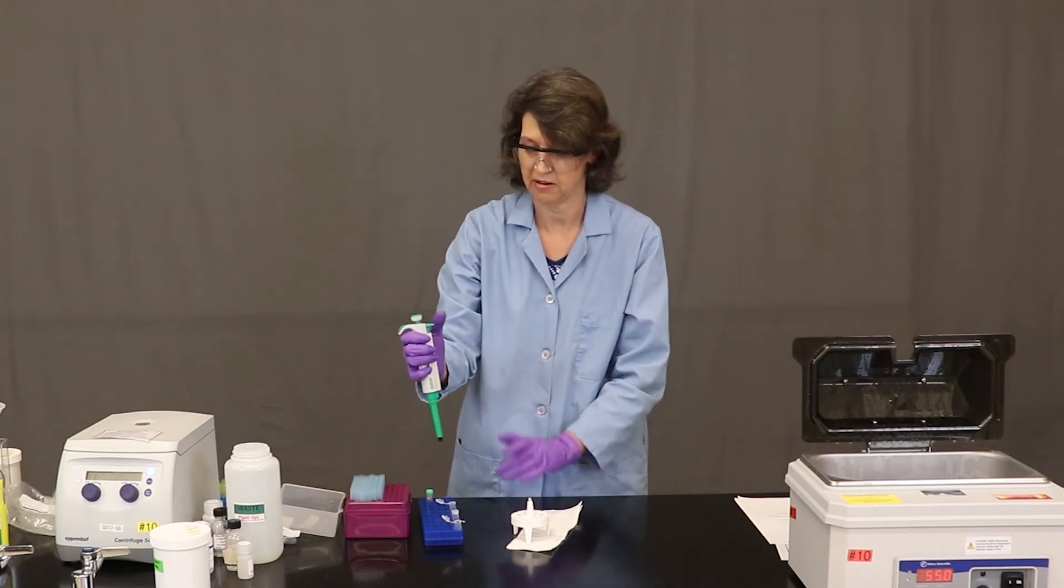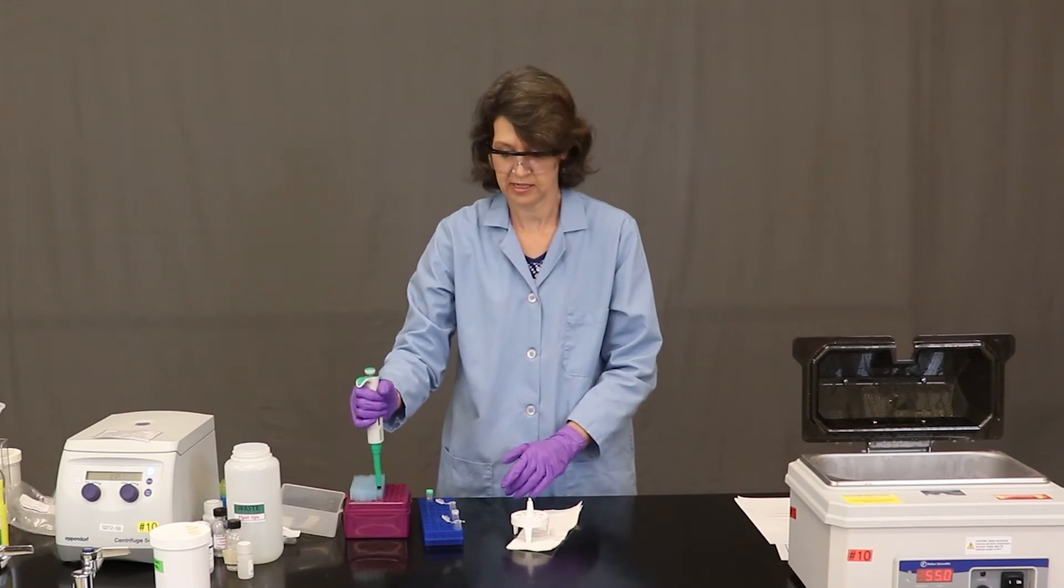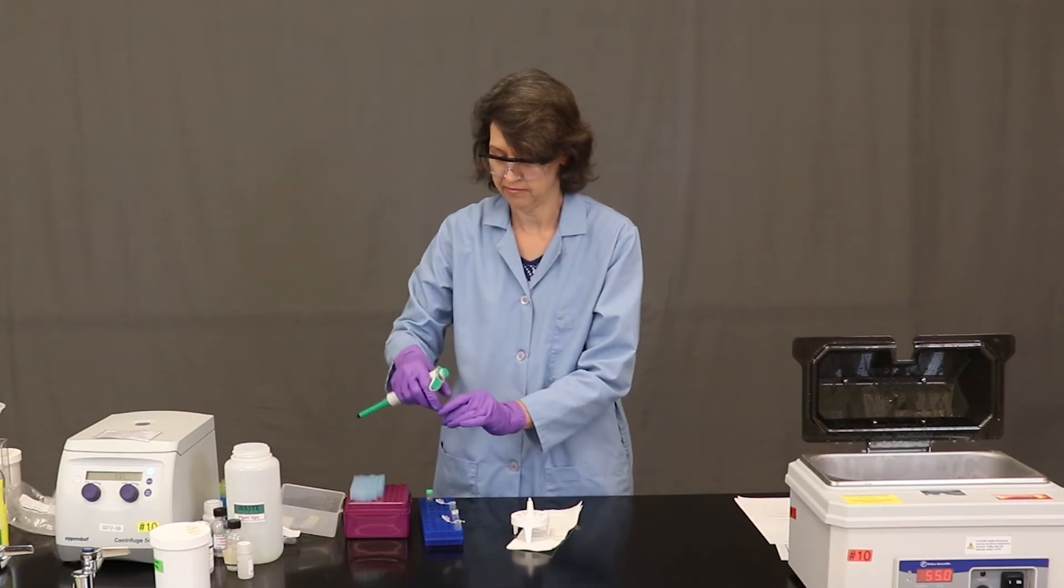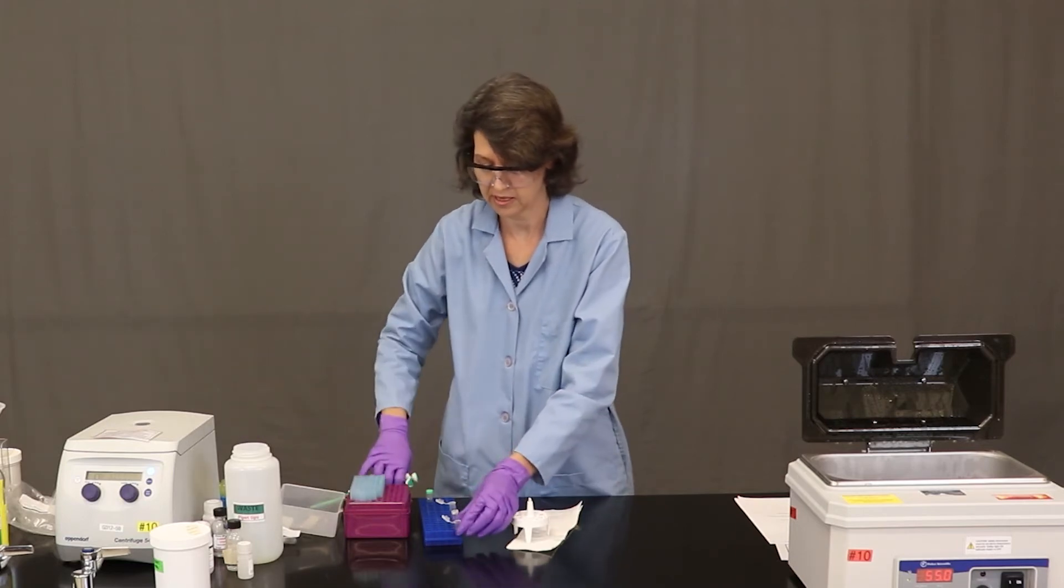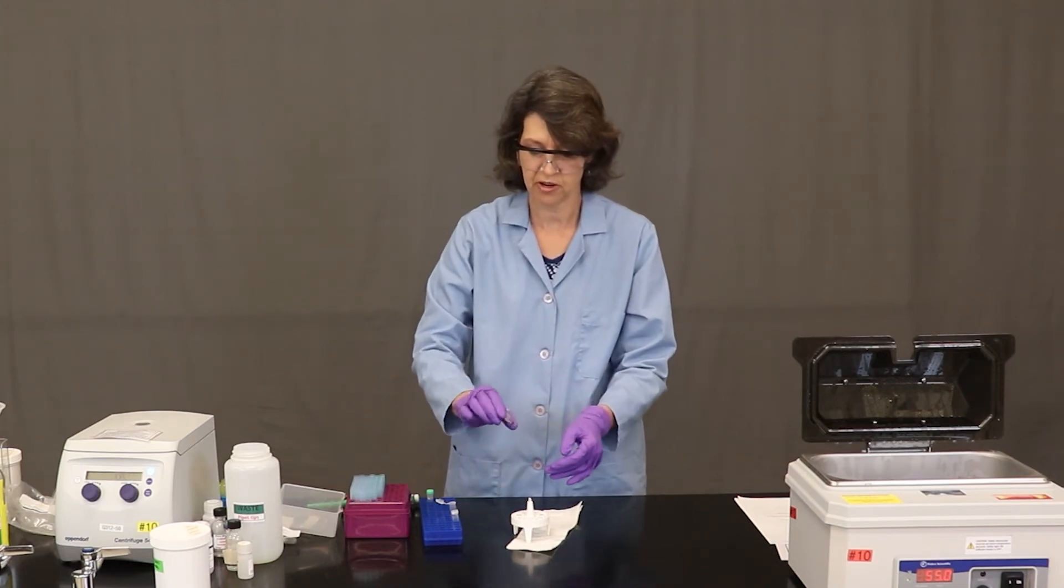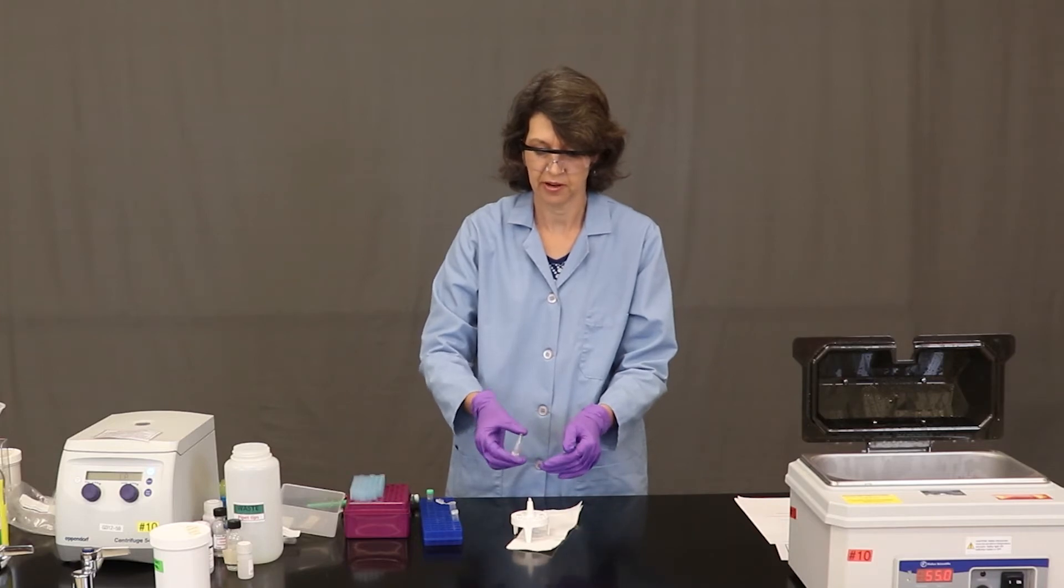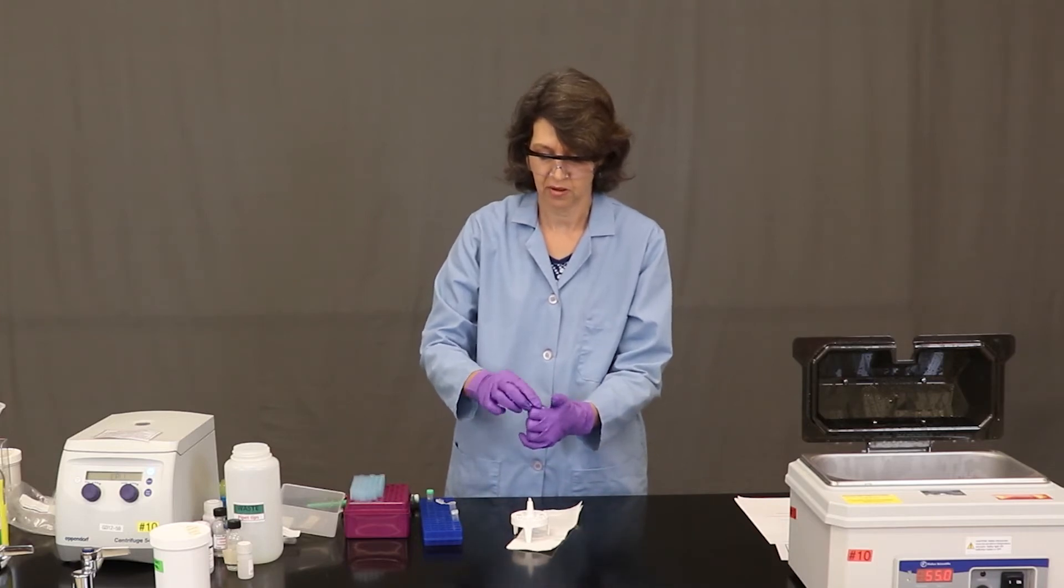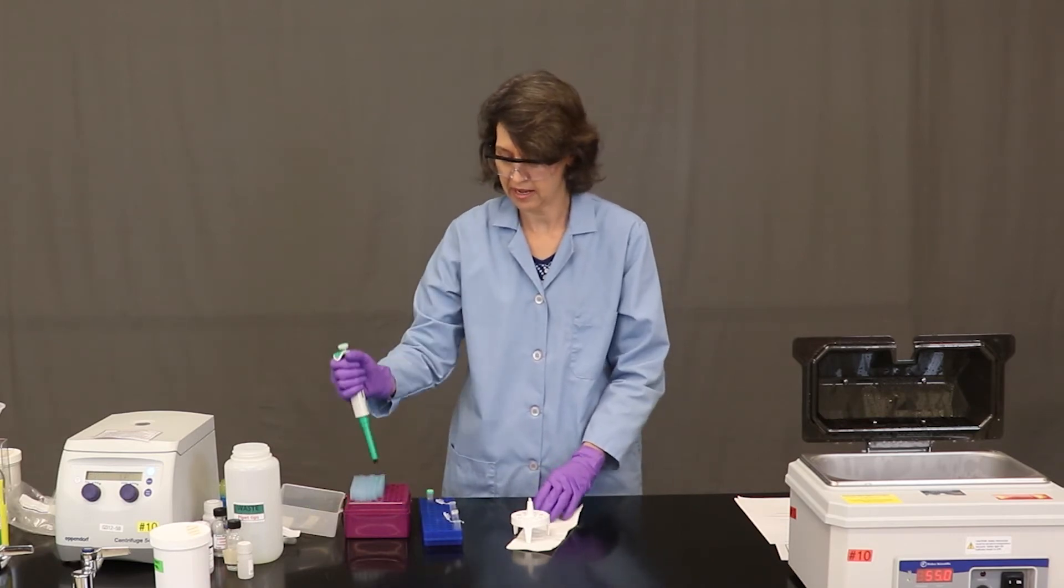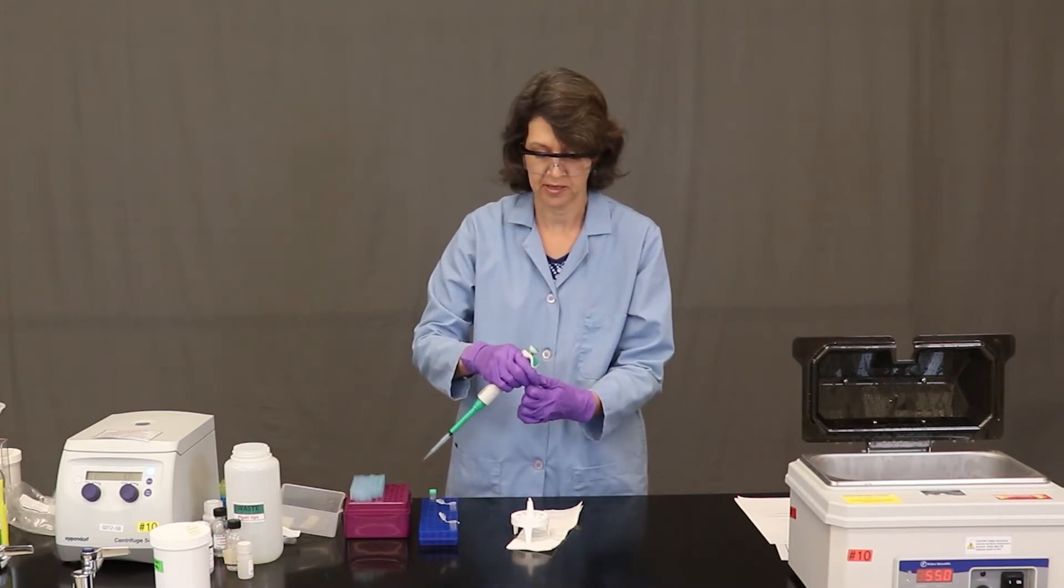And then I'm going to eject the tip in my tip waste container. So that's what that other button here does, is eject the tip. And you always want to change tips anytime you're using a different solution. So I need to mix this up. So I'm going to close the tube, just invert it gently a few times to mix the buffer in with the materials that were in there before. And now I'll go ahead and add the ethanol, which will precipitate the DNA.